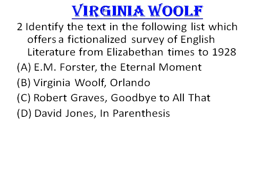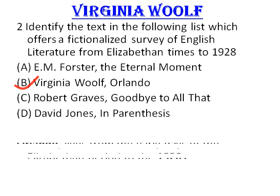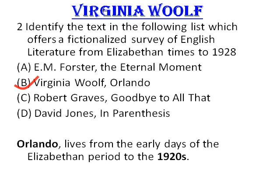Next question: Identify the text which offers a fictionalized survey of English literature from Elizabethan times to 1928. Option number B, Orlando by Virginia Woolf, is the right answer. Orlando is a character from this novel who lives from the early days of the Elizabethan period to 1928.